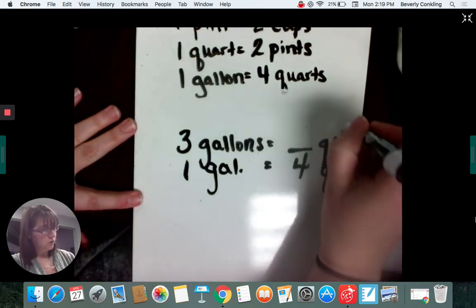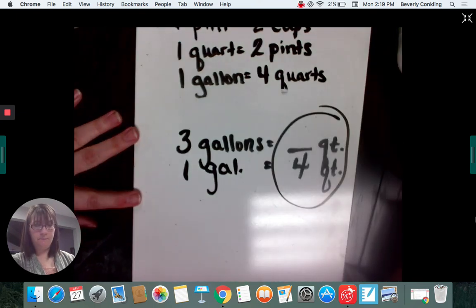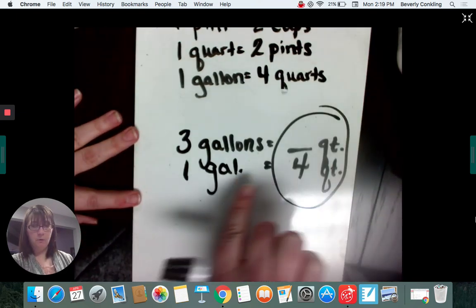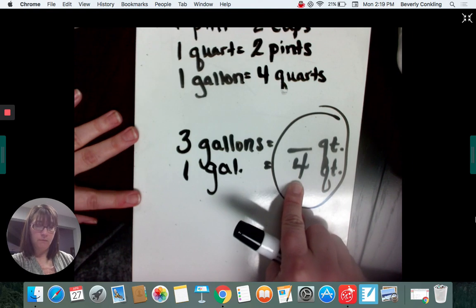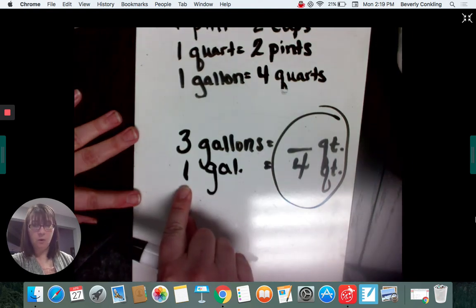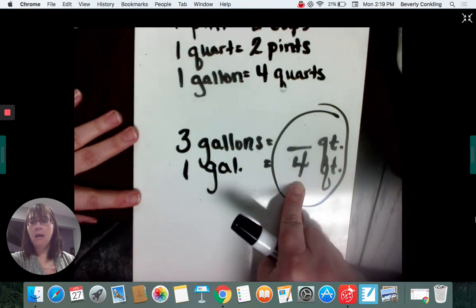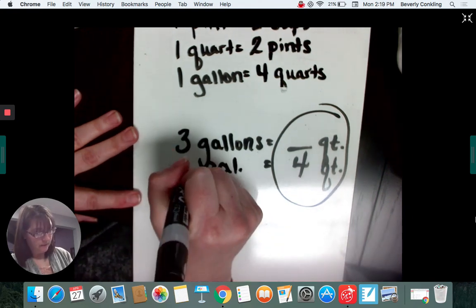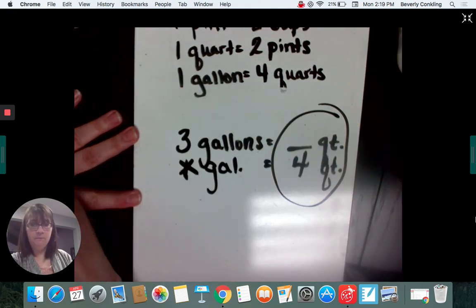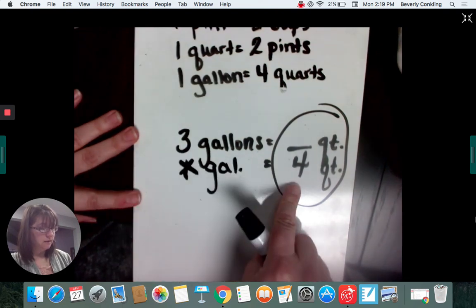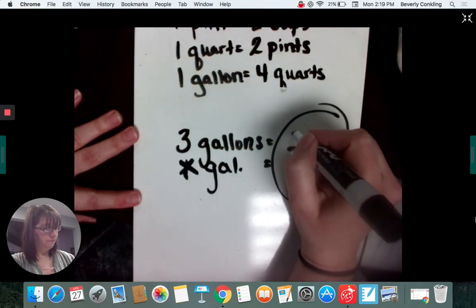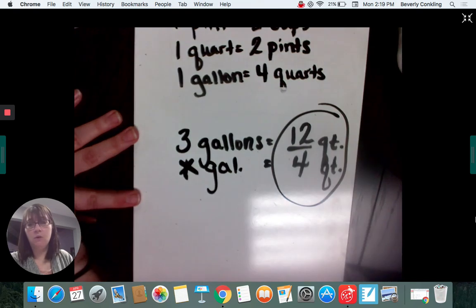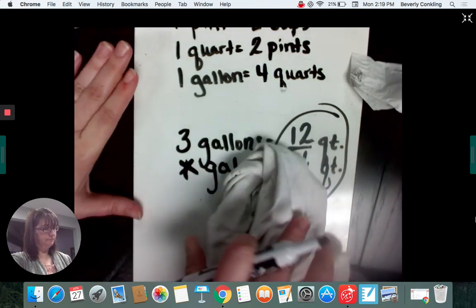Circle the side with the blank. Look at the bottom row only. Is four bigger or smaller than one? It is bigger. If I want a bigger answer, I'm going to have to multiply. I never use the one, so I'm going to multiply three times four and get 12. So three gallons equals 12 quarts.